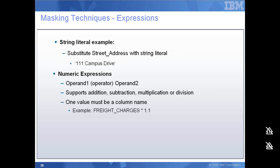Another form of masking technique is expression. I can mask, let's say, an address field with a string literal. A string literal is something which will remain constant for all the rows. So obviously if I'm using a string literal, it basically means that all the records of a particular table or a particular data element will remain the same and will have the same masked output. Someone looking at the data will know that it has been modified. But for purposes of testing, I can use a string literal and that will serve my purpose.